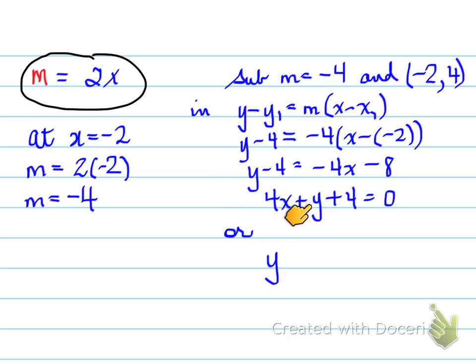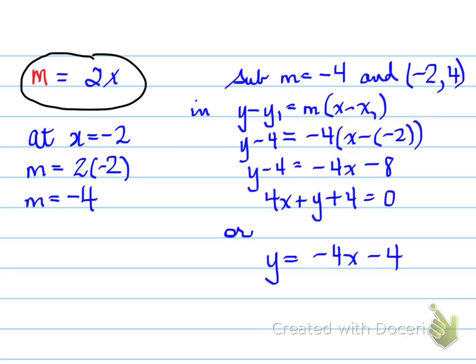Bringing everything over, you end up with 4x + y + 4 = 0 in standard form. Or in slope-intercept form: y = −4x − 4. This is the equation of the tangent line at x = −2.